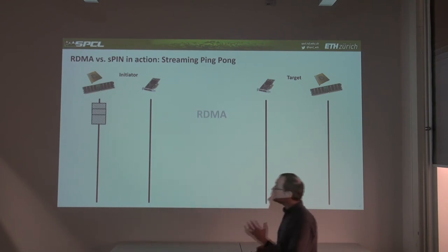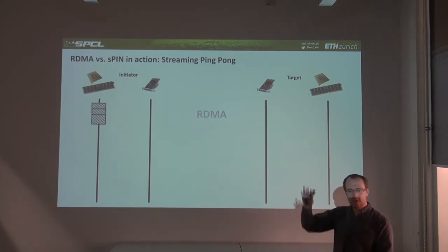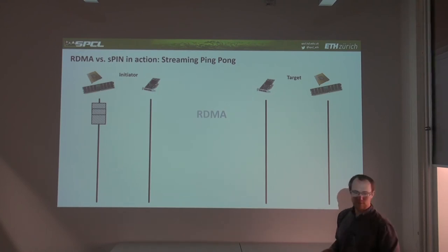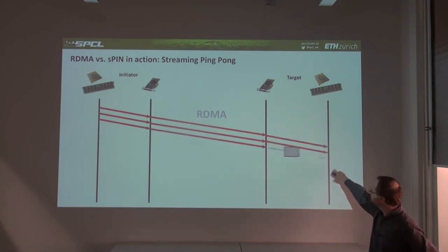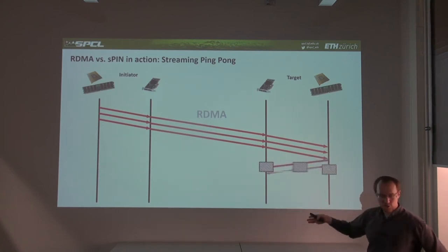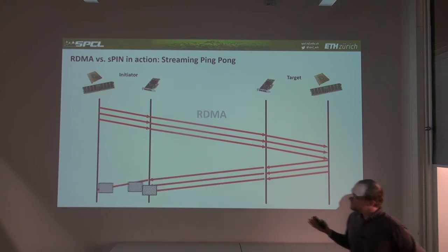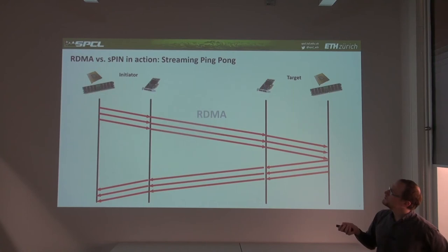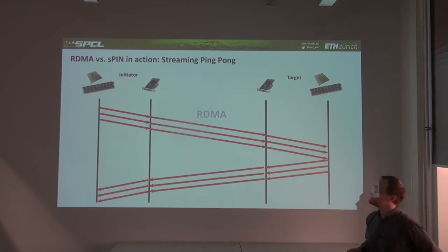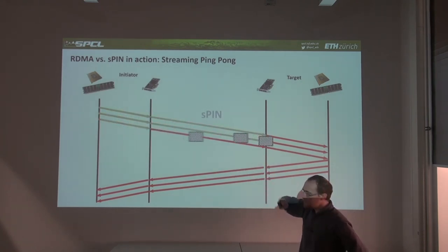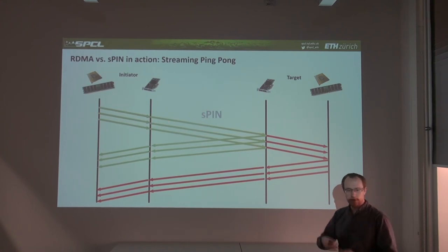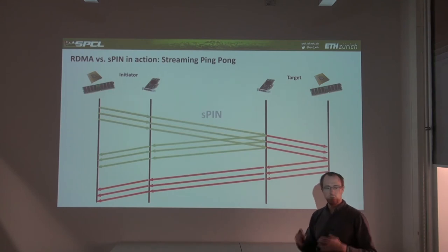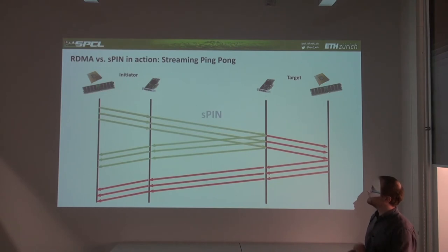For larger messages — say a gigabyte — in RDMA, packets stream one by one into destination memory, then once fully received, the pong is initiated and data streams back. In the SPIN model, because we never have enough memory to store the whole message at the NIC, the key insight is that you process it packet by packet, forwarding data through the network packet by packet in a modular, streaming fashion. This is why it's called streaming processing in the network — the S in SPIN.